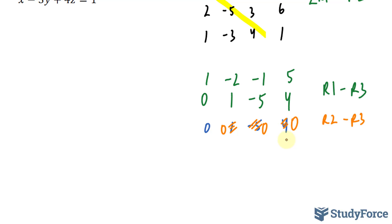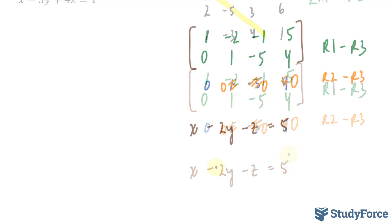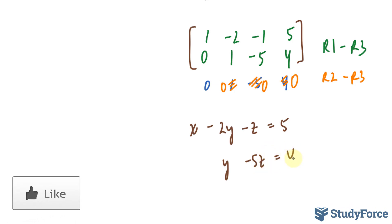So we've reduced our matrix down to one that's 2 by 4. Another way to look at this matrix is to rewrite it as an equation. So our first row is x minus 2y minus z is equal to 5. And for this row we have y minus 5z is equal to 4.